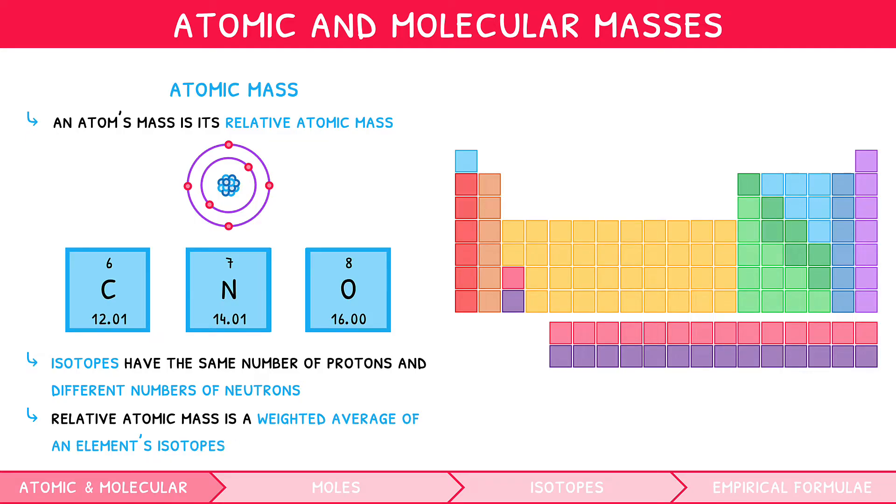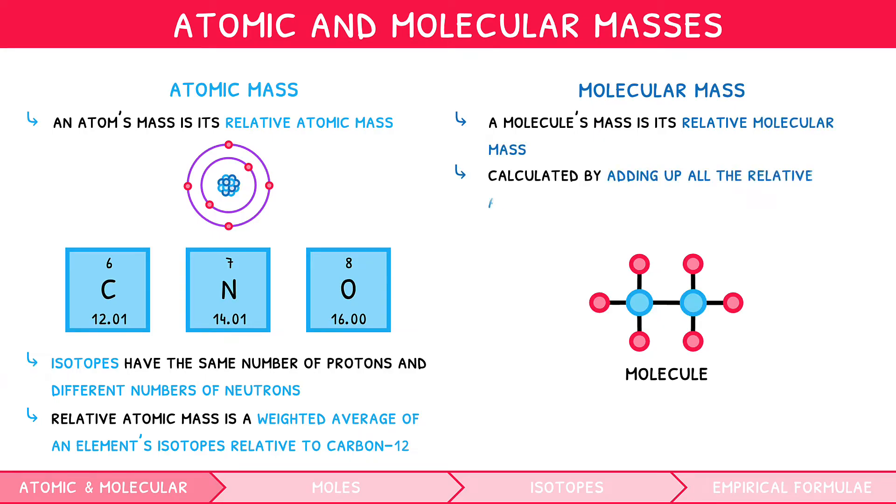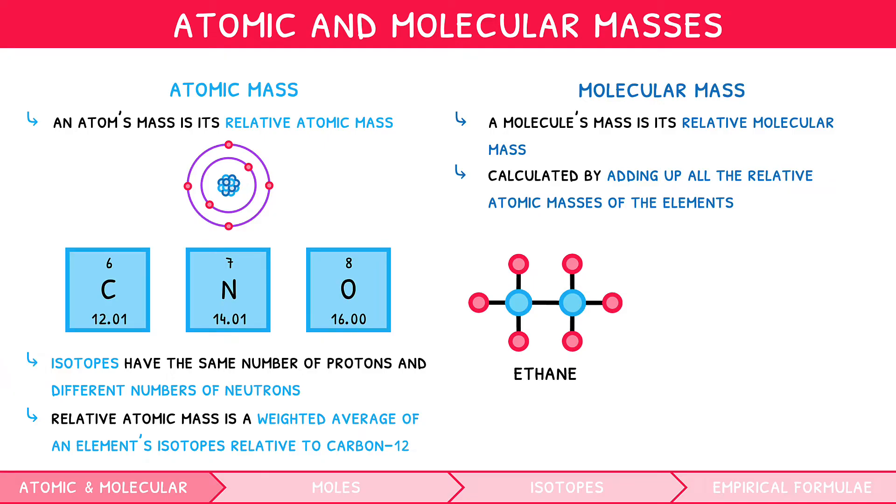Relative atomic masses are always quoted relative to carbon 12. The mass of a single molecule is referred to as its relative molecular mass. This is simply calculated by adding up all the relative atomic masses of the elements within that molecule. For example, ethane, C2H6, contains two carbons and six hydrogens. Each carbon has a relative atomic mass of 12.01, and each hydrogen 1.01. Therefore, the total of these is 30.08, and as such we say the relative molecular mass of C2H6 is 30.08.